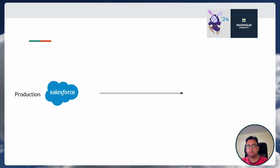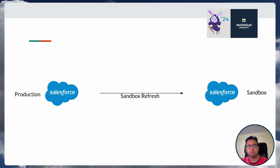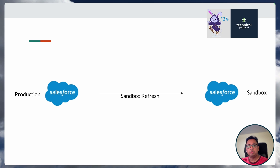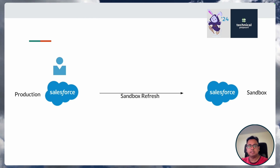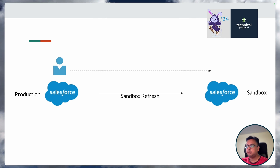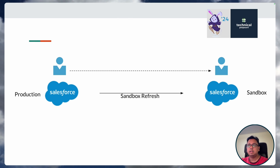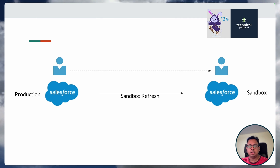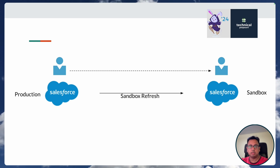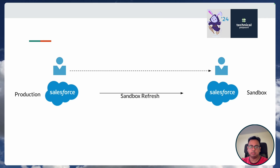So this is your production org. You initiate a sandbox refresh and what it will do is create a new sandbox — we all are familiar with this process. When you do that, the person who actually initiates the sandbox refresh will get access to this new sandbox, and their email address will remain the same. It will be the same password as the production password, and the person will get immediate access to this newly created or refreshed sandbox.